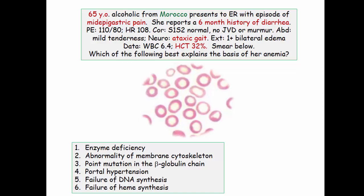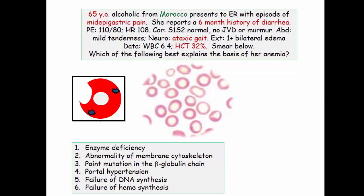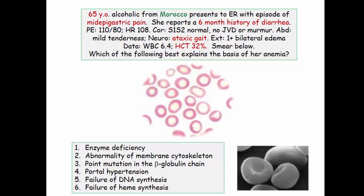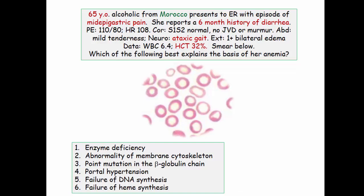Enzyme deficiency equals G6PD deficiency — we should see hemolysis and bite cells, none noted, and G6PD causes normochromic normocytic anemia. Cytoskeleton abnormality refers to spherocytosis: although it can result in microcytic cells, they are hyperchromic, not hypochromic — they lose the central pallor. Point mutation refers to thalassemia, characterized by target cells. Portal hypertension gives rise to cytopenias, but not hypochromia. Failure of DNA synthesis is the language of folate and B12 deficiency — those cells should be macrocytic and definitely not hypochromic.